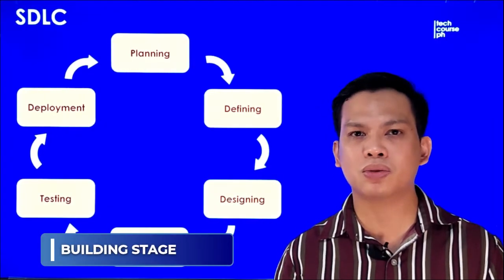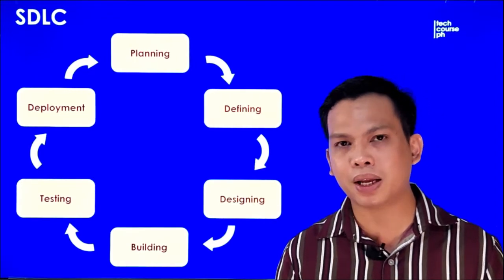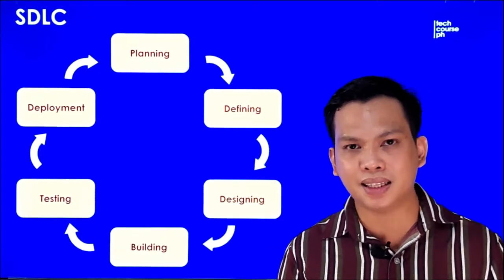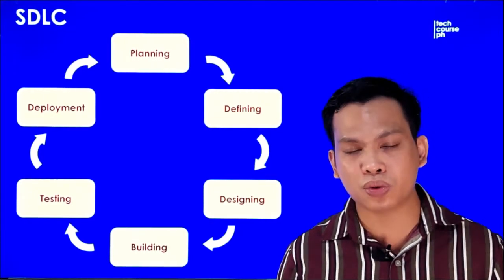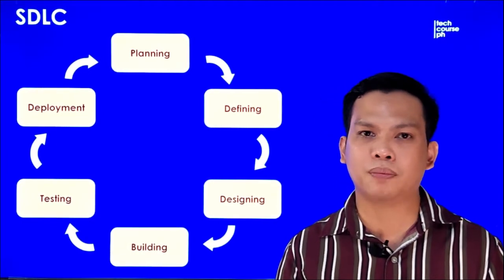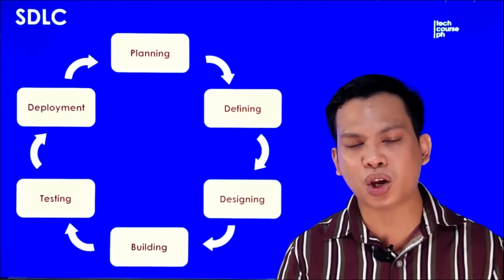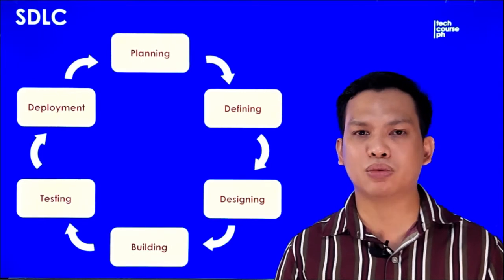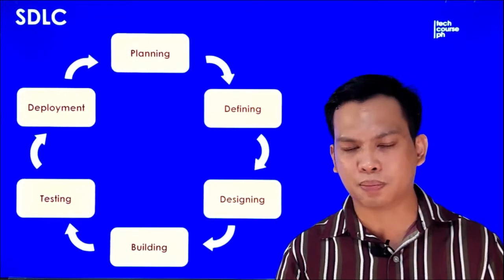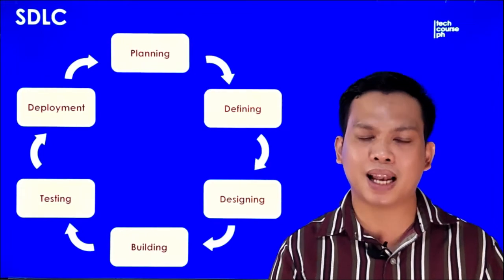Ang next stage naman natin is the building stage. Ito yung stage kung saan yung actual development ay nagsisimula, kasi dito ginagawa na yung mga programming codes, base pa rin doon sa DDS or yung Document Design Specification na susundin para mabuo yung ating mga programming codes. Dito rin tayo gumagamit ng mga tools like interpreter, compiler, debugger para ma-produce natin yung mga programming codes, at gumagamit din tayo ng mga high-level programming languages depende sa pangangailangan ng ating software — pwede gumamit ng C, C++, Java, PHP, at marami pang iba.